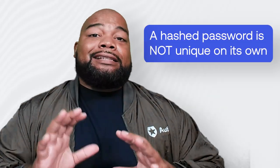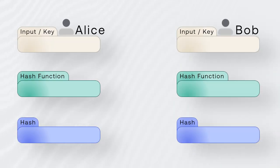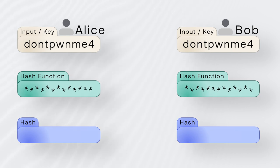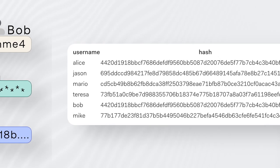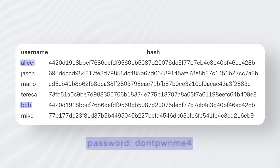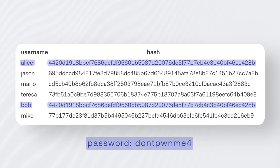A hashed password is not unique on its own, and that's due to the deterministic nature of hash functions. When you give a hash function the same input, you always get the same output. So if Alice and Bob were to choose the same password, their output hash would be the same. By looking at that table, we can infer that Alice and Bob have the same password because they have the same hash output.